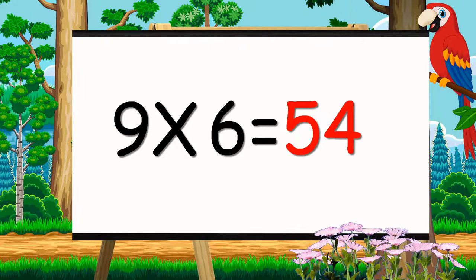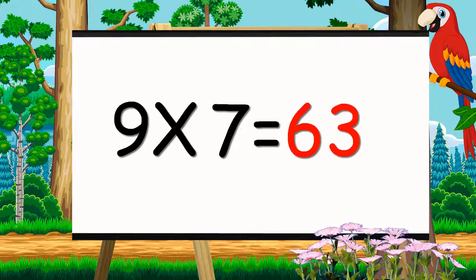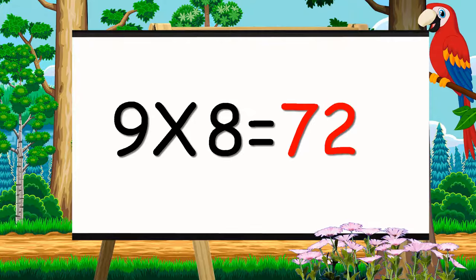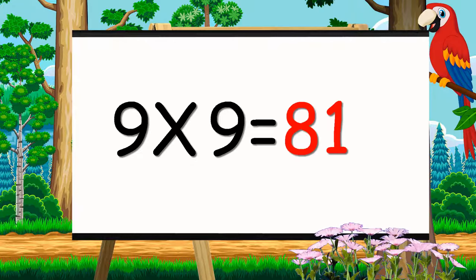Nine sixes are fifty-four. Nine sevens are sixty-three. Nine eights are seventy-two. Nine nines are eighty-one.